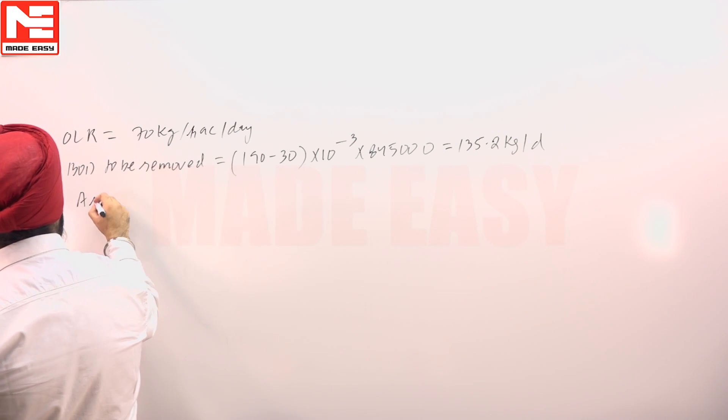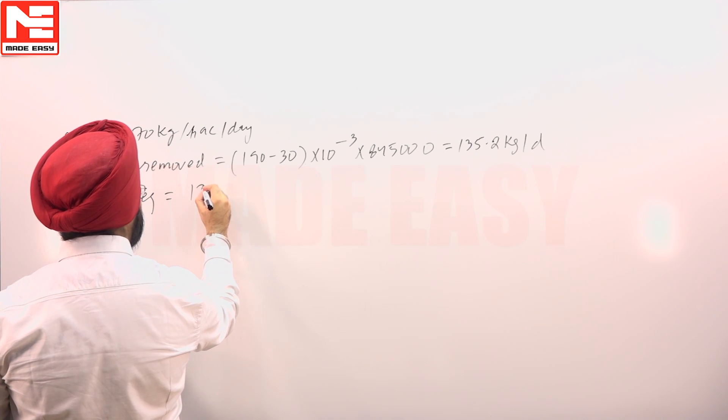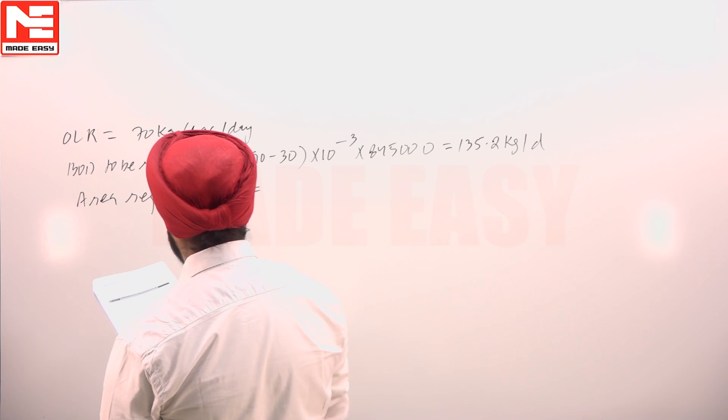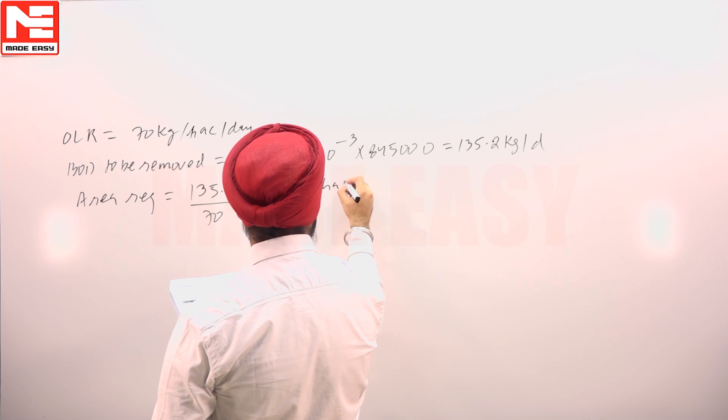So, we can find the area, so area required is 135.2 divided by 70, so it comes out to be 1.93 hectares.